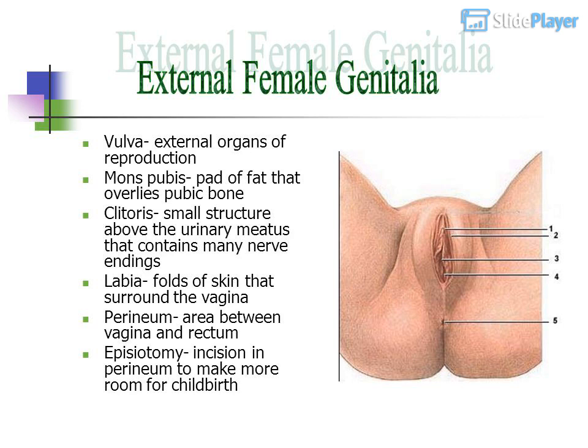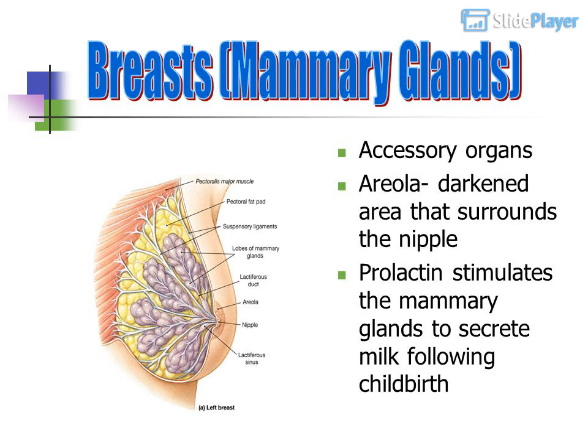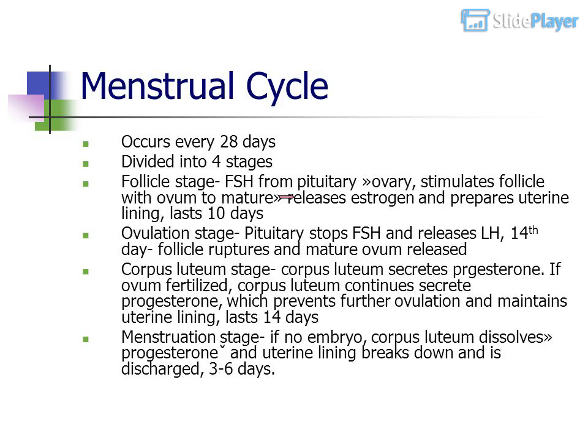The perineum is the area between the vagina and rectum. An episiotomy is an incision in the perineum to make more room for childbirth. Breasts are mammary glands, which are accessory organs. The areola is the darkened area that surrounds the nipple. Prolactin stimulates the mammary glands to secrete milk following childbirth.